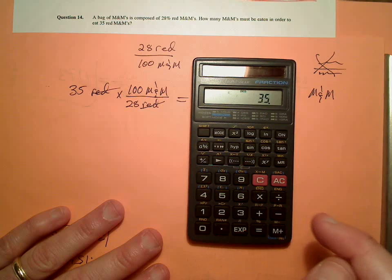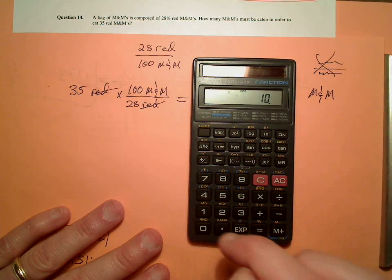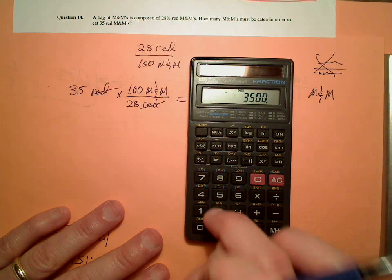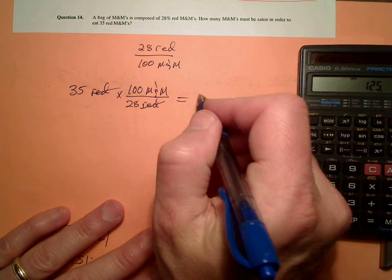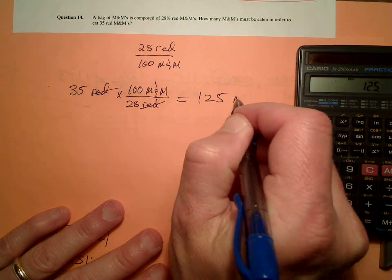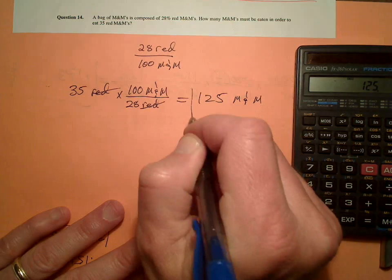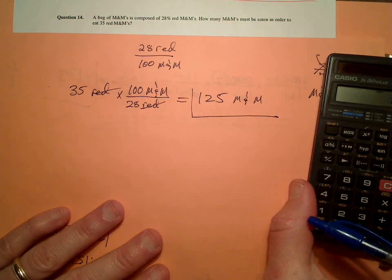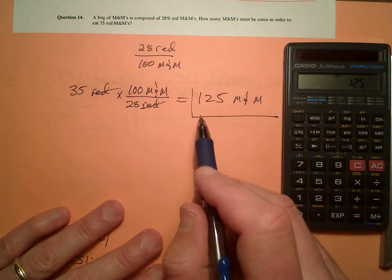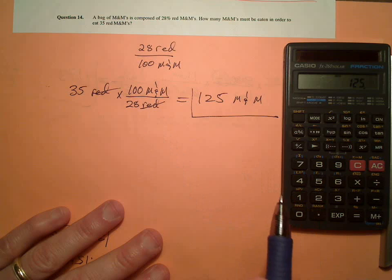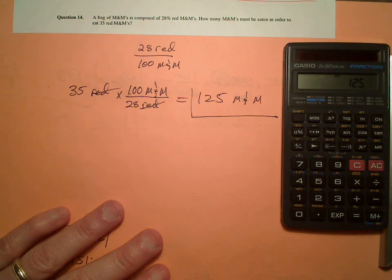So 35 times 100 divided by 28 equals 125. So if you couldn't watch and pick out red, you'd have to eat 125 M&M's before you ate 35, or in order to eat 35 red ones.